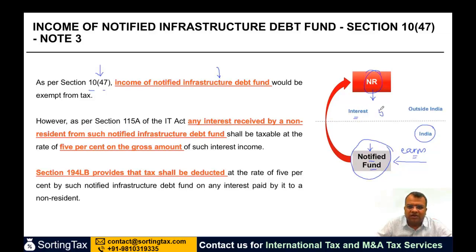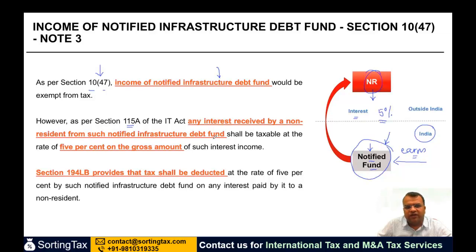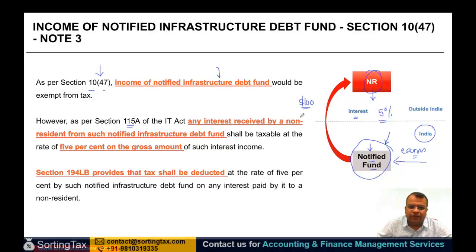This tax is to be levied at 5%. So as per Section 115, any interest received by a non-resident from such a notified infrastructure debt fund shall be taxable at the rate of 5% on the gross amount of such interest income. If you have 100 rupees of such interest income, it will be 5% tax on the gross amount.